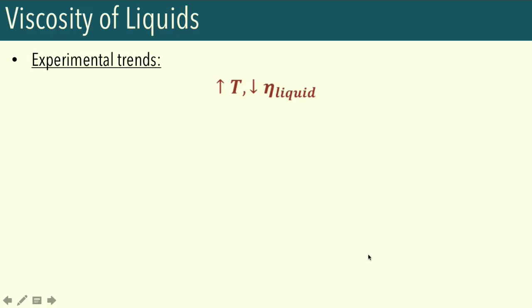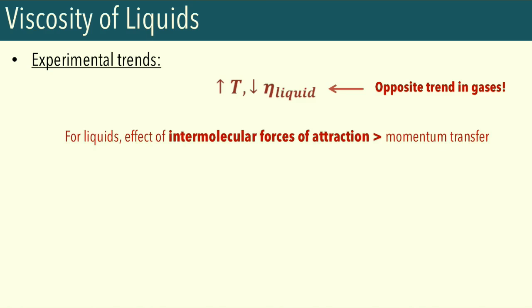Now let's look at the viscosity of liquids. Looking at the experimental trends for temperature versus viscosity, when we increase the temperature, the viscosity coefficient of liquids actually decreases — the opposite trend compared to gases. The two sources of internal friction are momentum transfer and intermolecular forces of attraction. For liquids, which are condensed phases with stronger intermolecular forces, the major source of internal friction is intermolecular forces of attraction rather than momentum transfer.